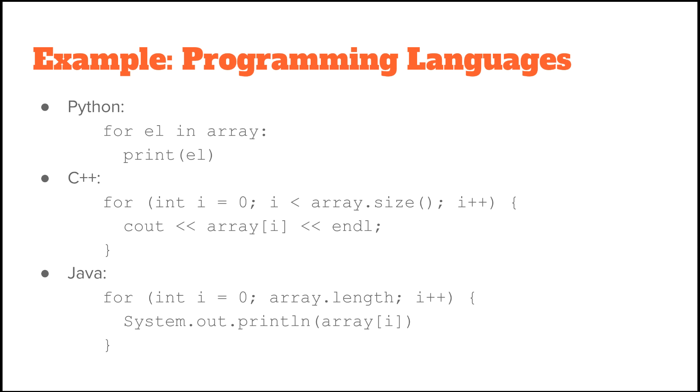As an example, here's how you would print out all the elements of an array in Python, C++, and Java. As you can see, the basic pattern is the same. The flow of code is the same. The only difference is minor syntactical details.